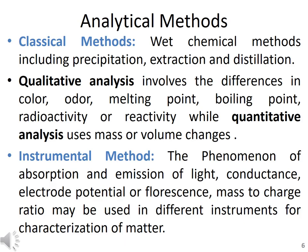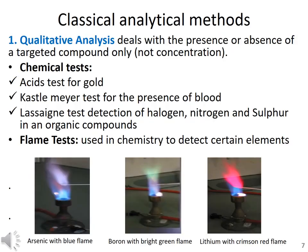Instrumental methods include different phenomena such as absorption and emission of light. You can see the atomic absorption spectrophotometer and atomic emission spectrophotometer. Similarly, conductance, electrode potential, fluorescence, mass-to-charge ratio — these are the phenomena which form the basis of different instruments used to characterize a given sample.